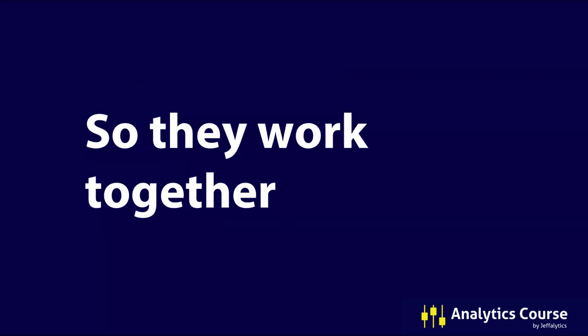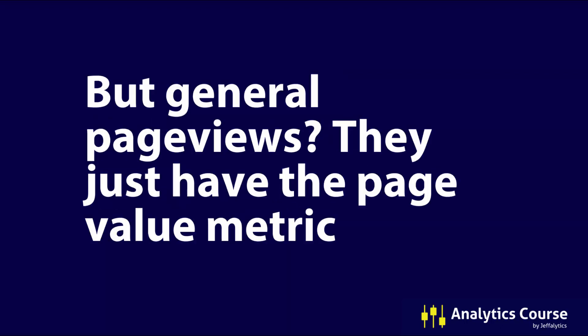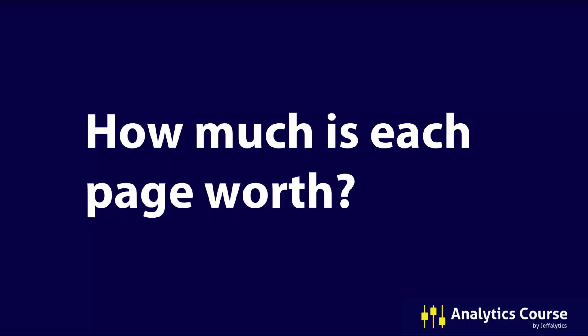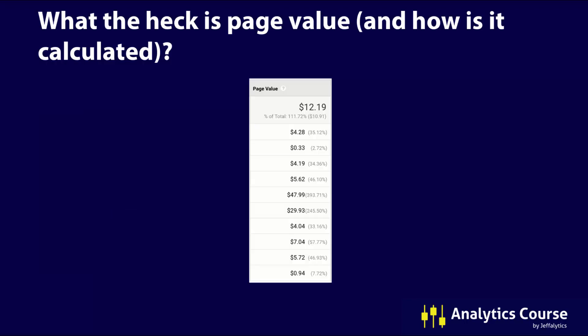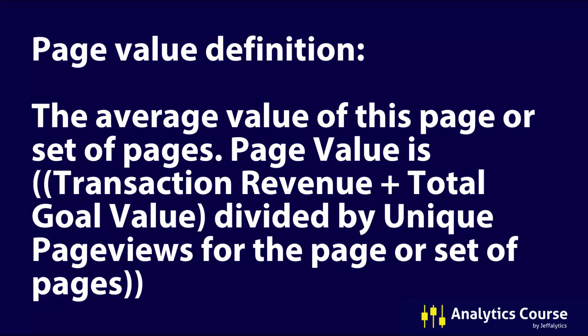To summarize: each session has a landing page which is the first page visited, and they work together as metrics. For general page views, all we have is the page value metric, which answers the question: how much is a page worth? If you look at the page value column, you might wonder what this dollar amount means and how every page can be worth $12. The page value definition, straight from Google: the average value of a page is transaction revenue plus total goal value divided by unique page views for that page or set of pages.